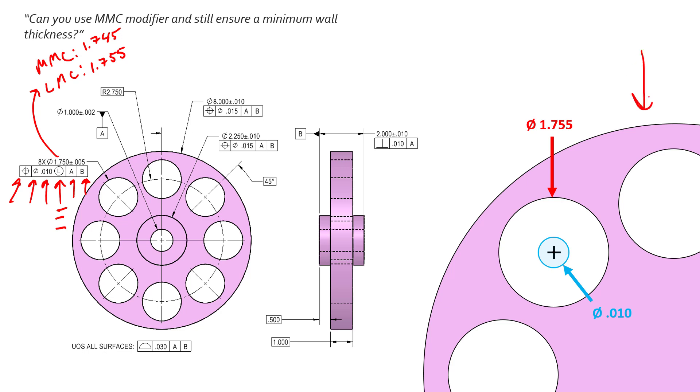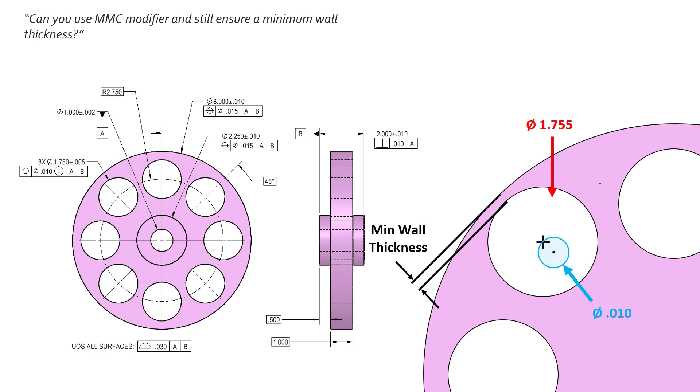What does that mean? Well, if we have this part over here and this part measures at 1.755, which is our LMC, we measure at LMC, we only get 10 thousandths. So this part physically measures at 1.755, we only get 10 thousandths of position error. So radially we get to drift 5 thousandths.